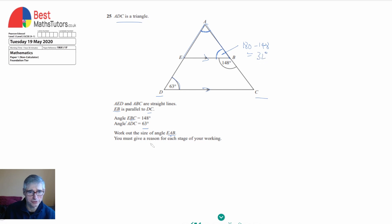I need to give a reason for each stage of my working. So what I can say is the angle ABE, because that's where that angle is, the central letter there, ABE is going to be equal to 32 degrees. And the reason is angles on a straight line add up to 180.